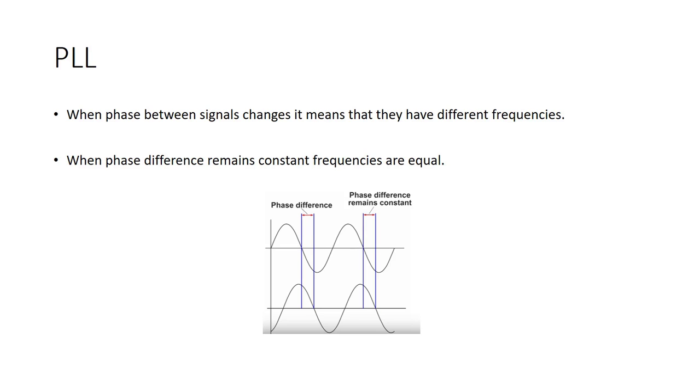When phase between signals changes it means that they have different frequencies. So imagine we have two frequencies and these two signals. And imagine that these two signals has phase difference. So signal 1 with F1 and signal 2 with F2. How can we make these two frequencies equal?